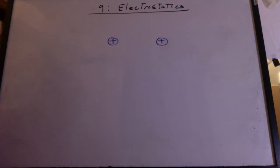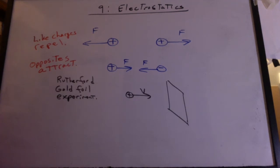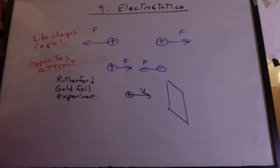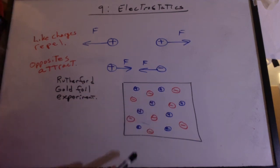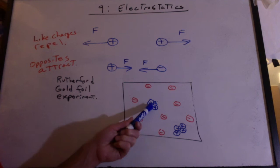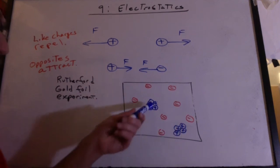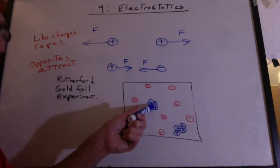A long time ago you learned that like charges repel and opposites attract. Then in chemistry you may have learned about the Rutherford gold foil experiment, where he shot positive particles at a very thin film of gold. Most of the particles went right through, but some bounced back. He was expecting to find positive and negative charges in the gold foil rather evenly distributed, but the experiment showed that most of the positive charges were lumped together — collected in centers.